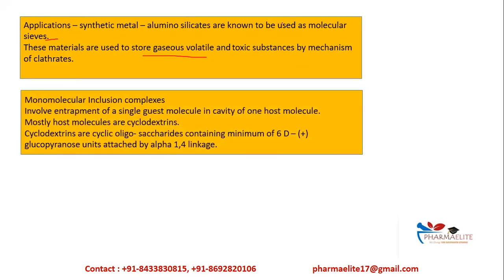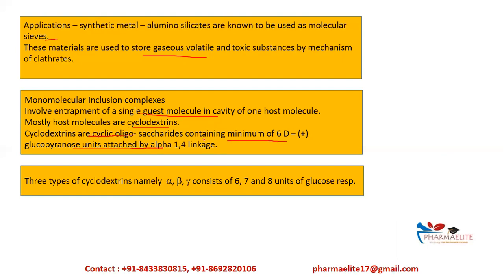The next category is monomolecular type of complexes. These involve entrapment of a single guest molecule inside the cavity of one host — one host incorporates only one guest. Whereas in clathrates you might have one host incorporating several guests, in monomolecular complexes mono means single. The most common host molecule is cyclodextrin. Cyclodextrins are cyclic oligosaccharides containing a minimum of six glucopyranose units attached by 1,4-alpha linkage.